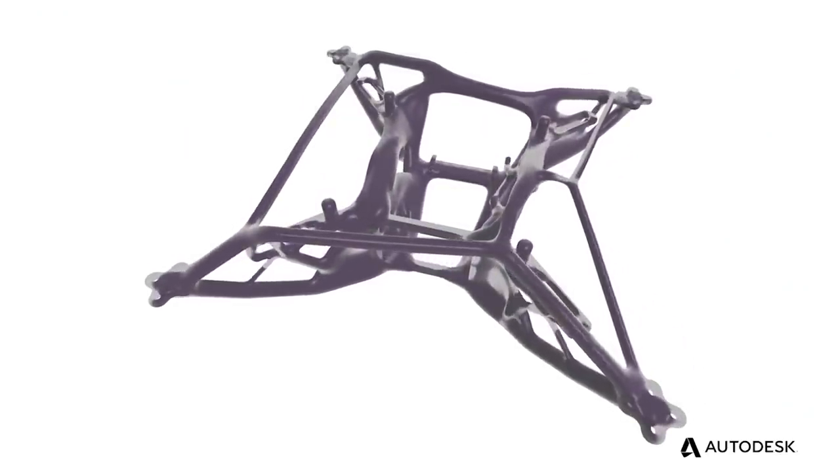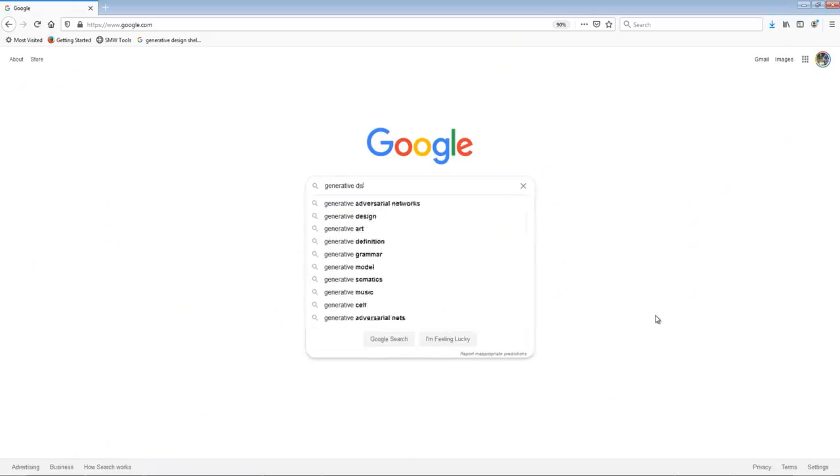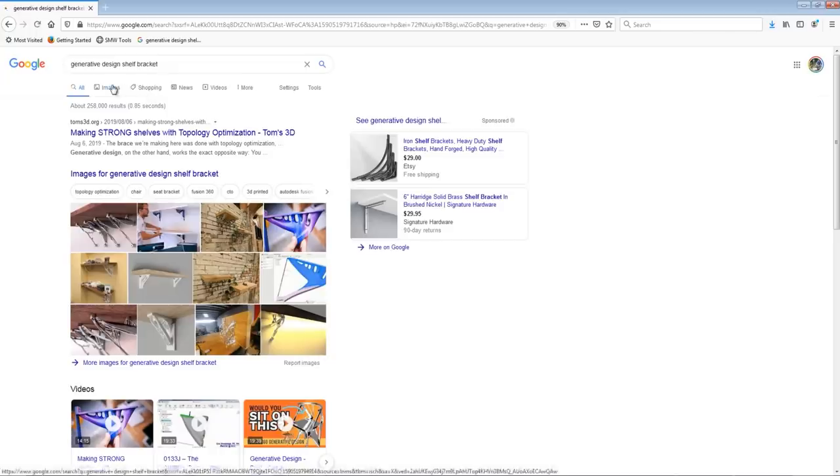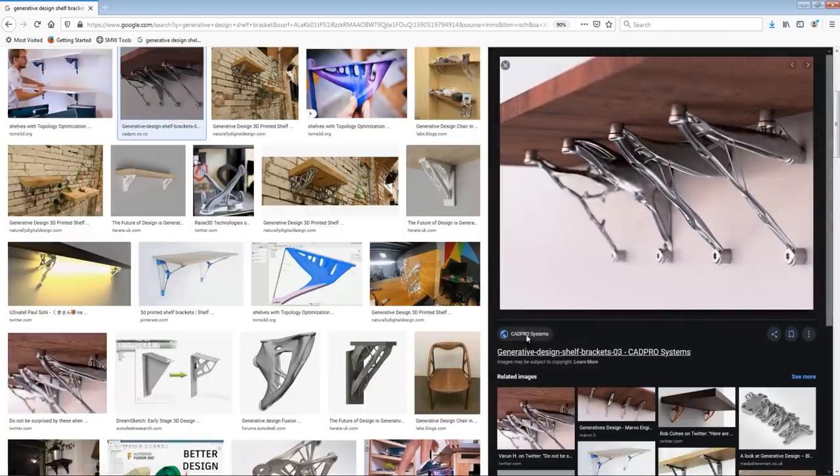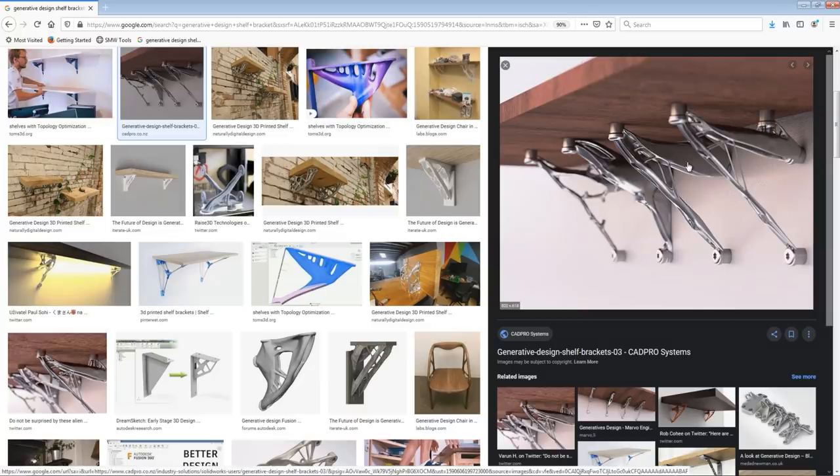If you kind of rewind through the history of how we as humans have made parts, take a shelf bracket. It's a really simple part. For so long, it was an easy process to make with the tools that we have. Well, in the last few decades, the tools that we have have really changed.